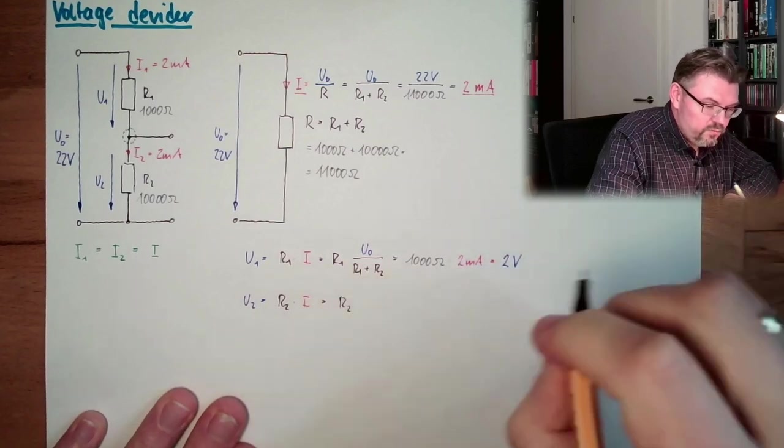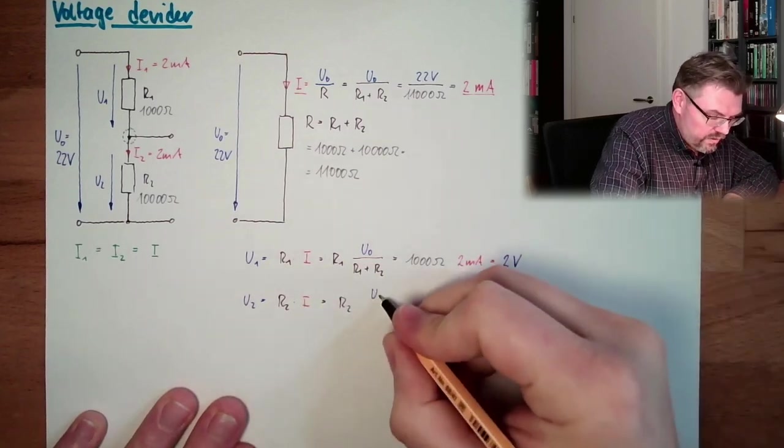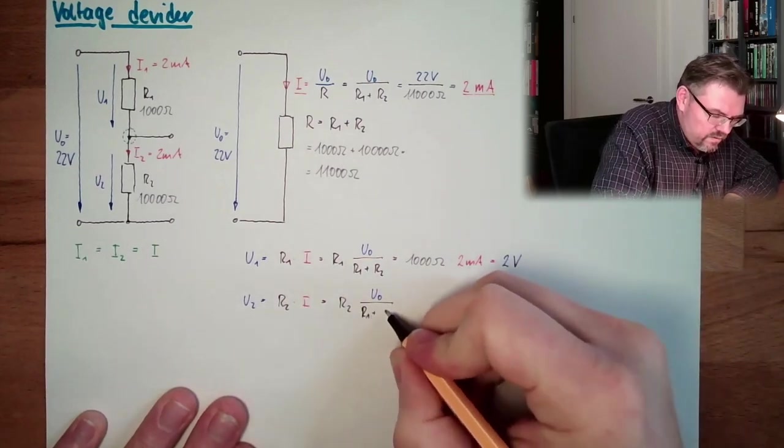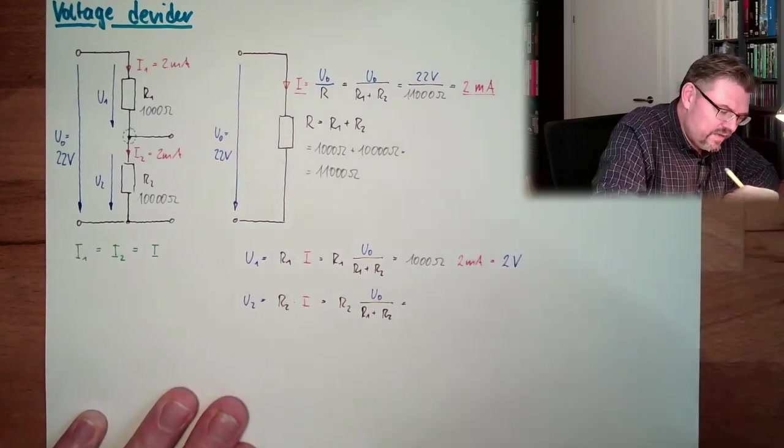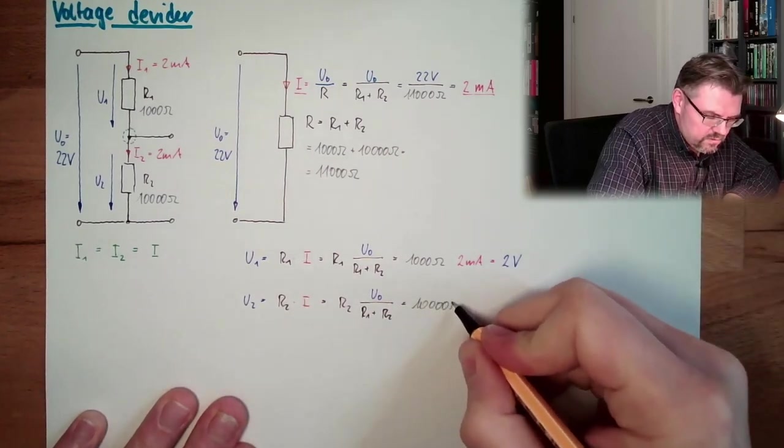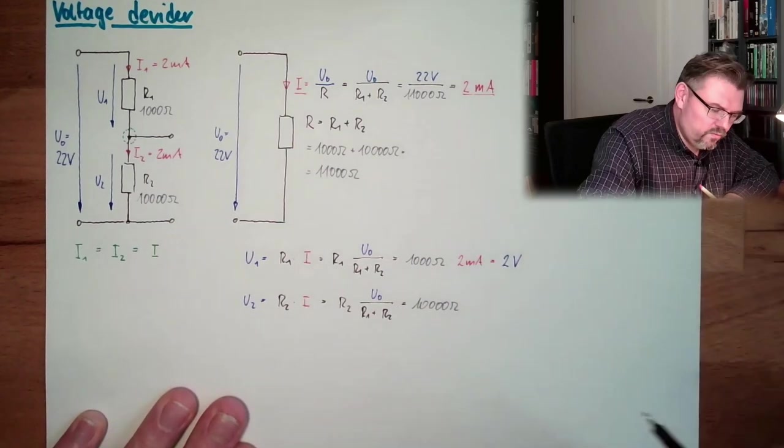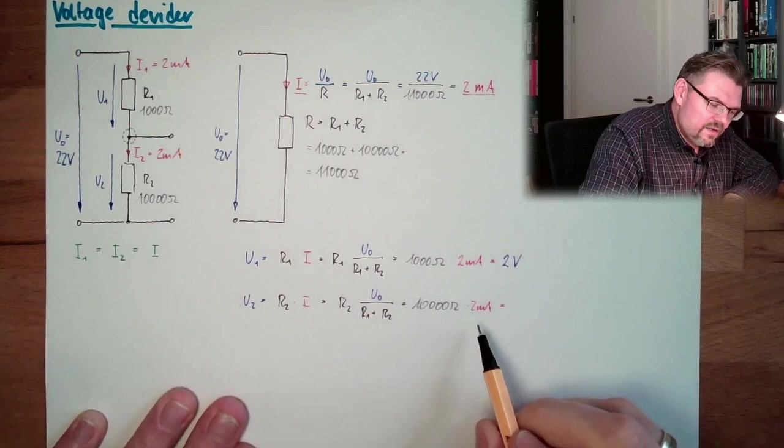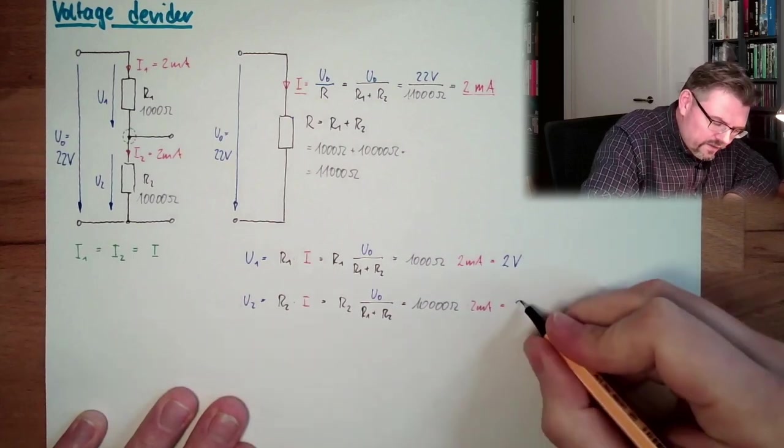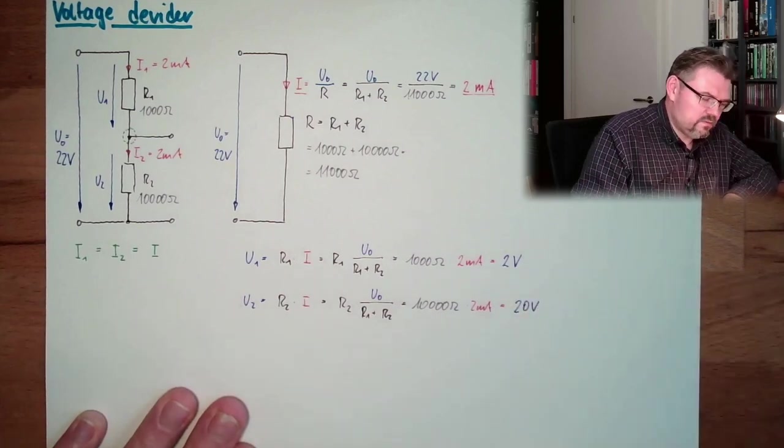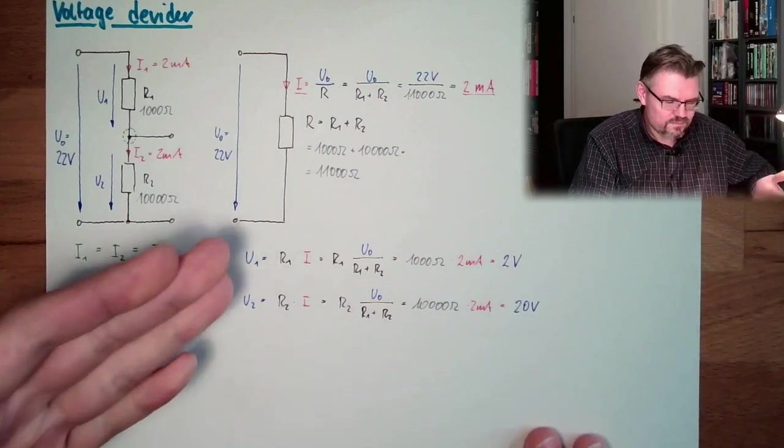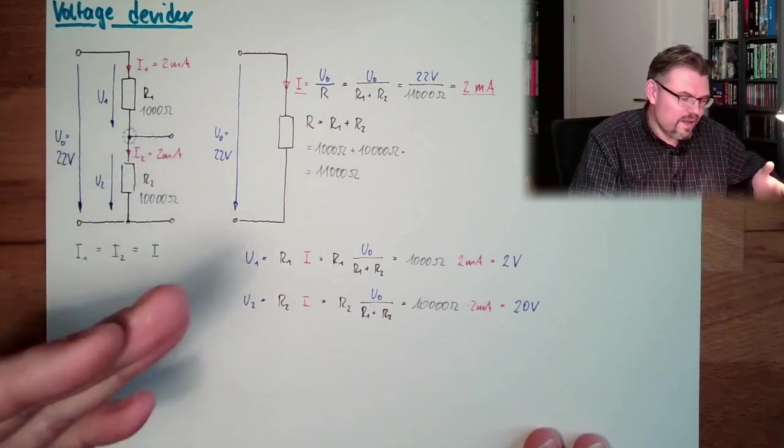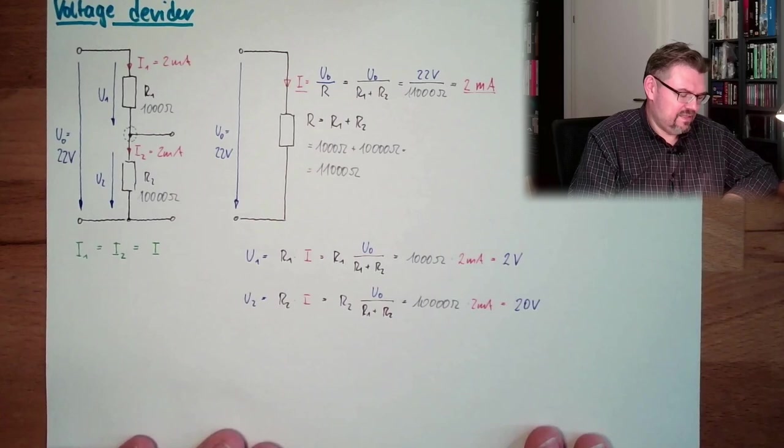So actually, we have here U2 equals R2 multiplied by U0. I just did not comment this now. Because it's pretty much the same. And this time it's 10,000 ohms. Multiplied by 2 milliamps. So we're ending up at 10,000 to 20 volts. It's working, right? It is working pretty nice, I would say.